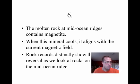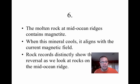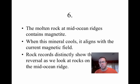Number six: how do scientists know that magnetic reversals have taken place in the past? The molten rock at mid-ocean ridges contains magnetite — you may want to underline that. When magnetite cools, it aligns with the current magnetic field. Our rock records distinctly show that these reversals have taken place as we look at rocks on both sides of the mid-ocean ridge.